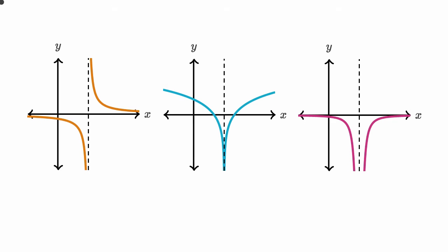We have the graph of three functions here, and we're told that one of them is the function f, one is its first derivative, and one of them is the second derivative. We just don't know which one is which. Pause this video and see if you can figure it out. The way I'm going to tackle it is I'm going to look at each of these graphs and try to think what would their derivatives look like.